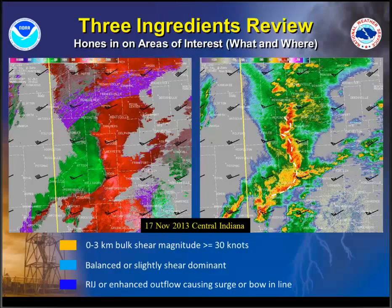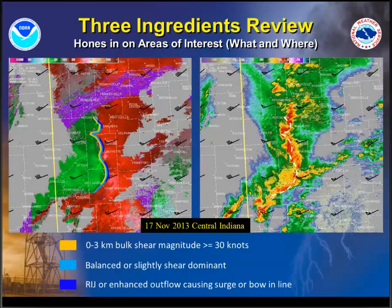Where are the zero to three kilometer bulk shear magnitudes greater than or equal to 30 knots? The zero to three kilometer bulk shear is overlaid in black vectors. Where the line normal component is greater than or equal to 30 knots covers the whole general area of the QLCS. Where is the line balanced or slightly shear dominant? It's a large part of this particular line, with the exception of the far southwest flank. Where are the surges and bows? There are several — one around Chalmers, one near Battleground and Lafayette, and one down towards Linden and Crawfordsville. You've got several areas along this line where all three ingredients are met for mesovortex genesis and rapid intensification.